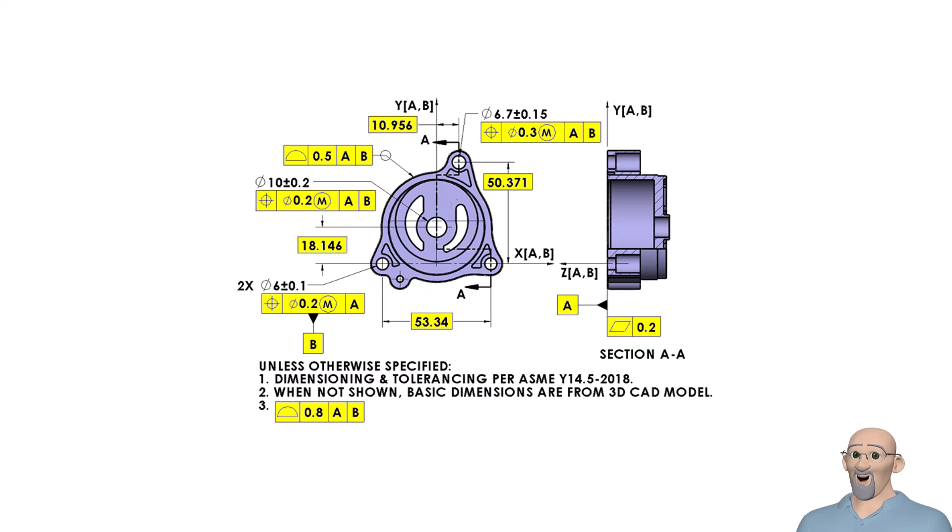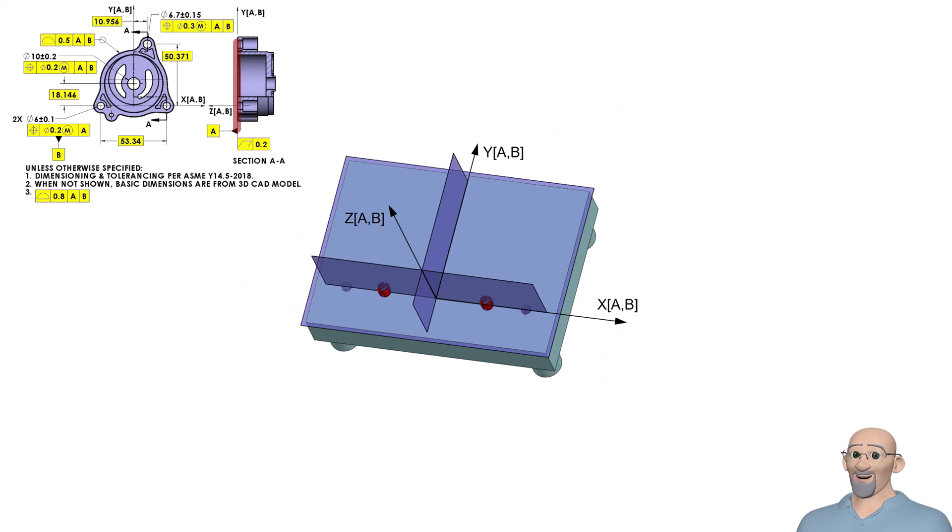Let's look at the part in more detail and discuss how the datum reference frame is established. We see that this surface of the part is datum feature A. In our datum reference frame, this will be datum plane A and it will be in line with the surface of the planar datum feature A simulator. In our example, the simulator is this base plate and you can see we have labeled datum plane A here. It is the XY plane.